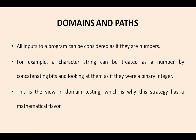This is the view of domain testing, which is why the strategy has a mathematical flavor — because it was taken from mathematical functions. For example, whatever character string we have, suppose AB01 can be treated as a number by concatenating the bits and looking at them as if they were a binary integer. AB is a character string concatenated with 01, which is a binary integer — 0 is binary and 1 is binary — so we can conclude it as a number. Even a character string can be classified as an integer. Similar examples like BC01 or BC10 are also allowed as inputs.